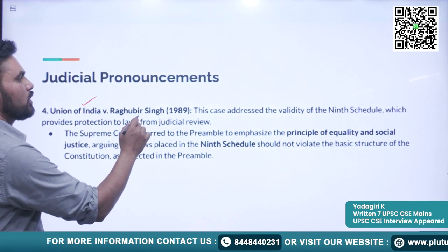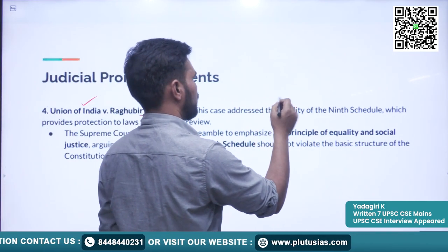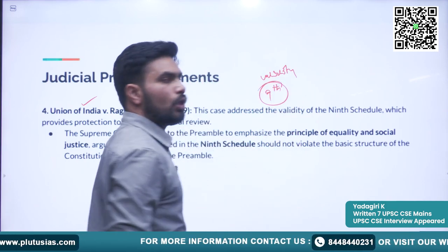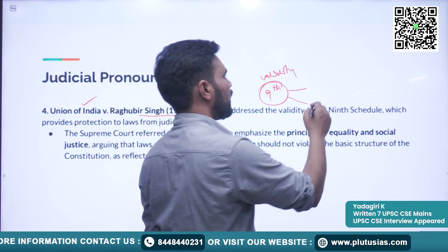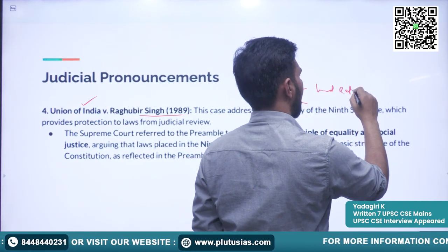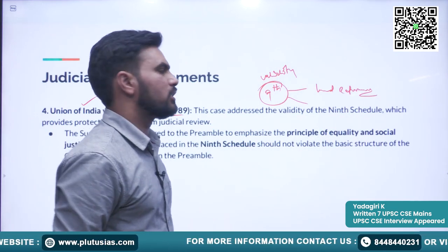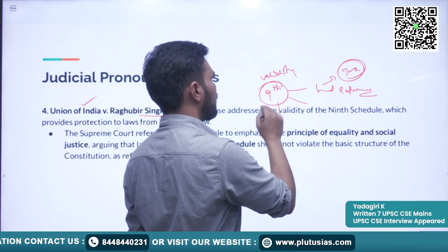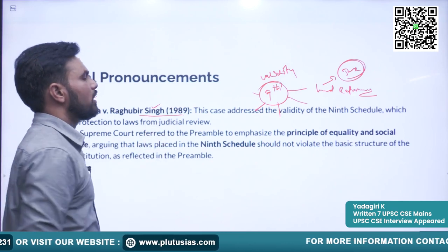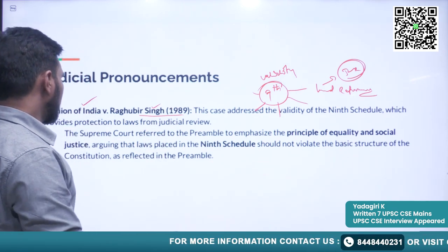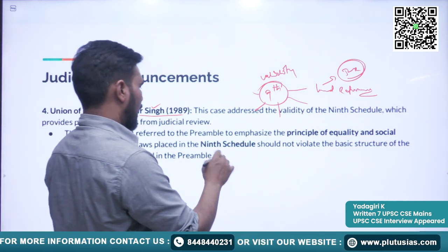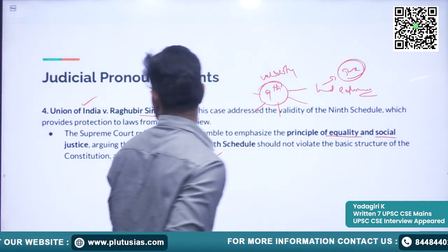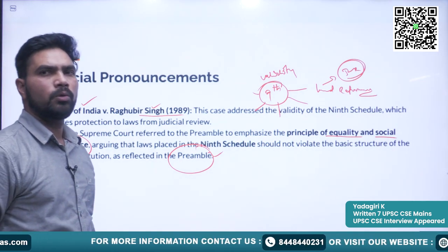The fourth case is Union of India versus Raghuvot Singh, where the Supreme Court was examining the validity of the Ninth Schedule. The Ninth Schedule was incorporated into the constitution to protect land reform acts, setting them outside the purview of judicial review. Over time, many things were incorporated into the Ninth Schedule. In examining its validity, the Honorable Supreme Court actively took the help of the preamble, relying on the principles of equality and social justice that are enshrined in it.